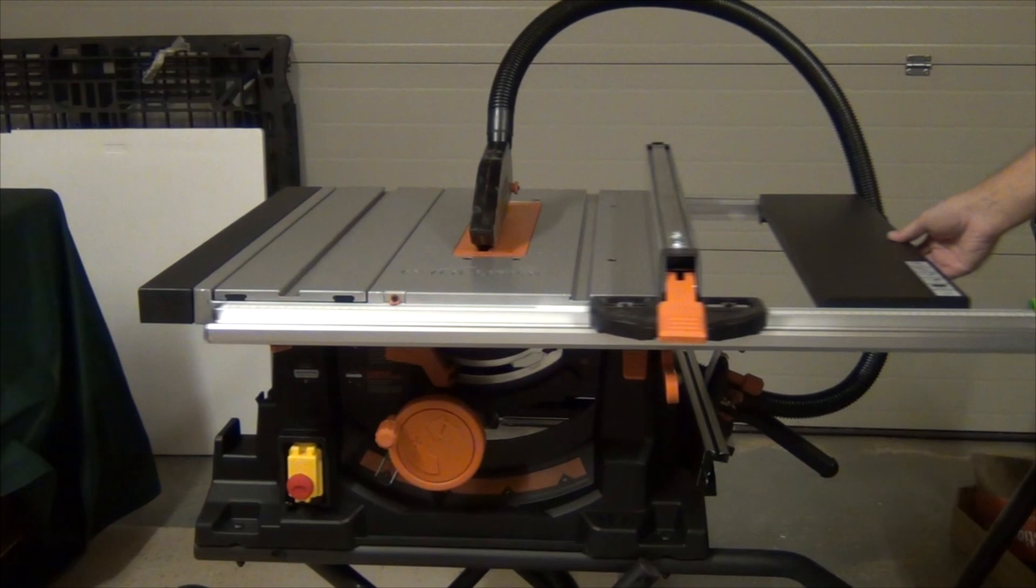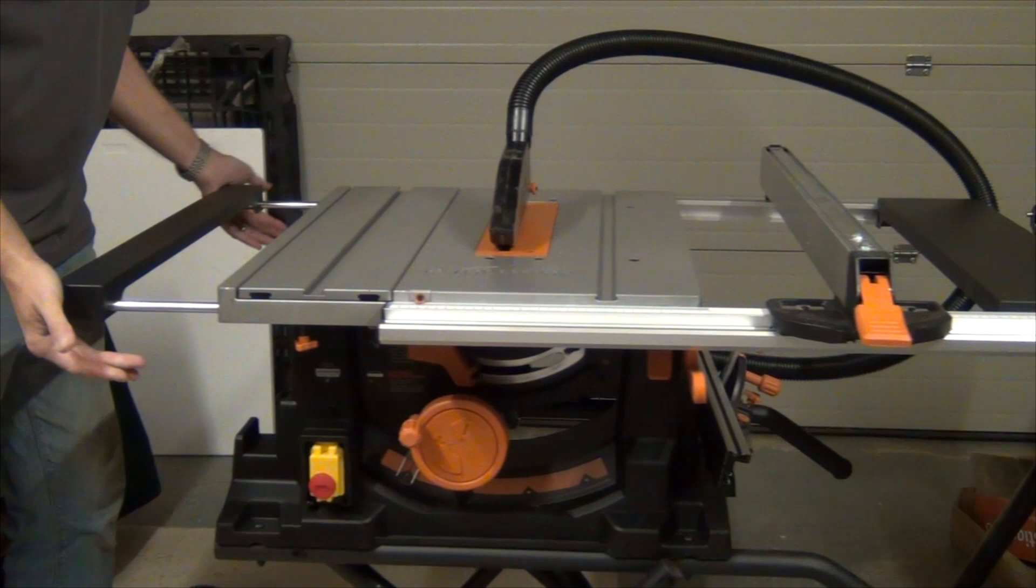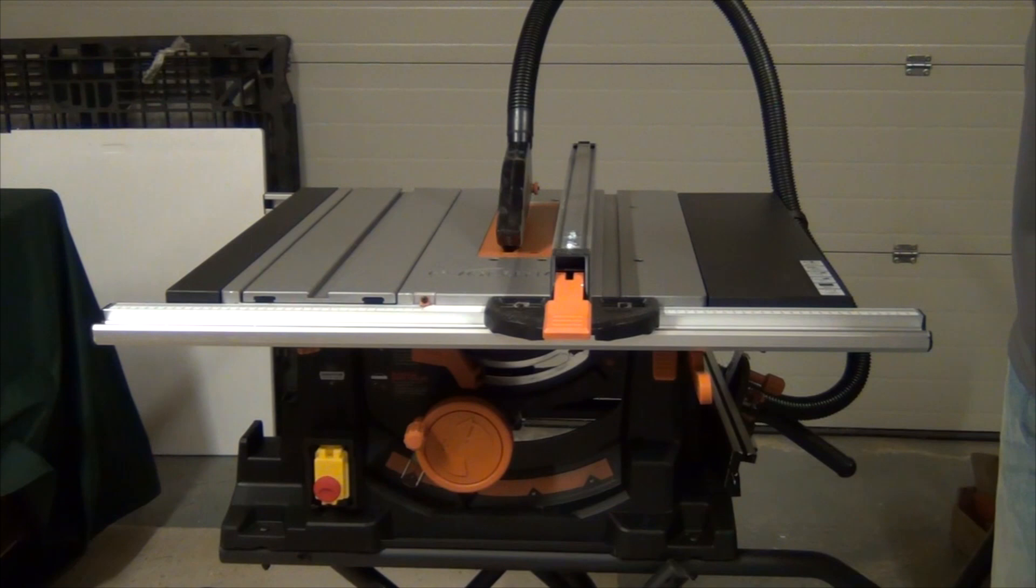Side extensions, both right of the blade and also on the left, allow for a large capacity on the table top. But when folded away, mean it needn't take up all that much space.